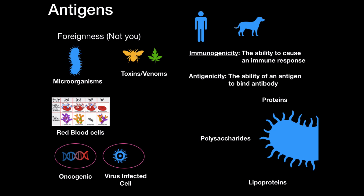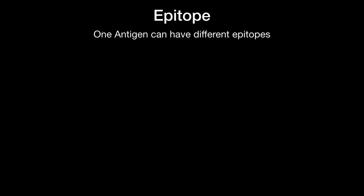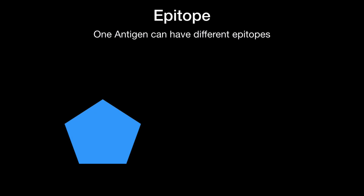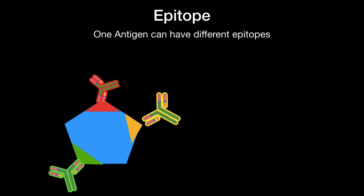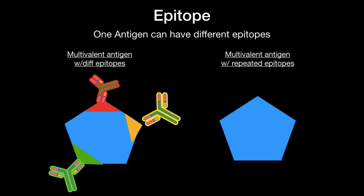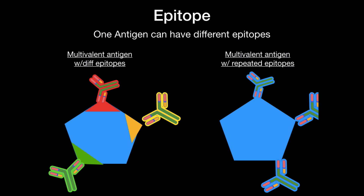Our body doesn't just bind to the antigen at whatever random place it grabs — it doesn't work like that. Each antigen has what we call epitopes, and epitopes are any part of an antigen that is recognized by the immune system. So one antigen can have different epitopes. Let's say this is an antigen — it's going to have three different epitopes on the surface where three different antibodies can bind to. This is what we call multivalent antigens with different epitopes. We can also have multivalent antigens with repeated epitopes where the same type of antibody binds to it.